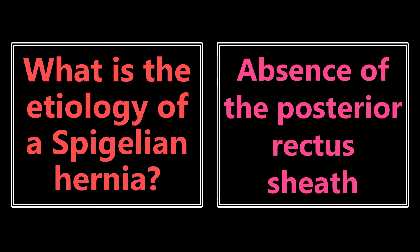What is the etiology of a Spigelian hernia? There are several different types of hernias we need to know, and this is one of the less common ones — which is exactly why they love to ask about it on the boards. The cause of a Spigelian hernia is the absence of the posterior rectus sheath. Because this sheath is not present, the bowel can become incarcerated between the two muscle layers.